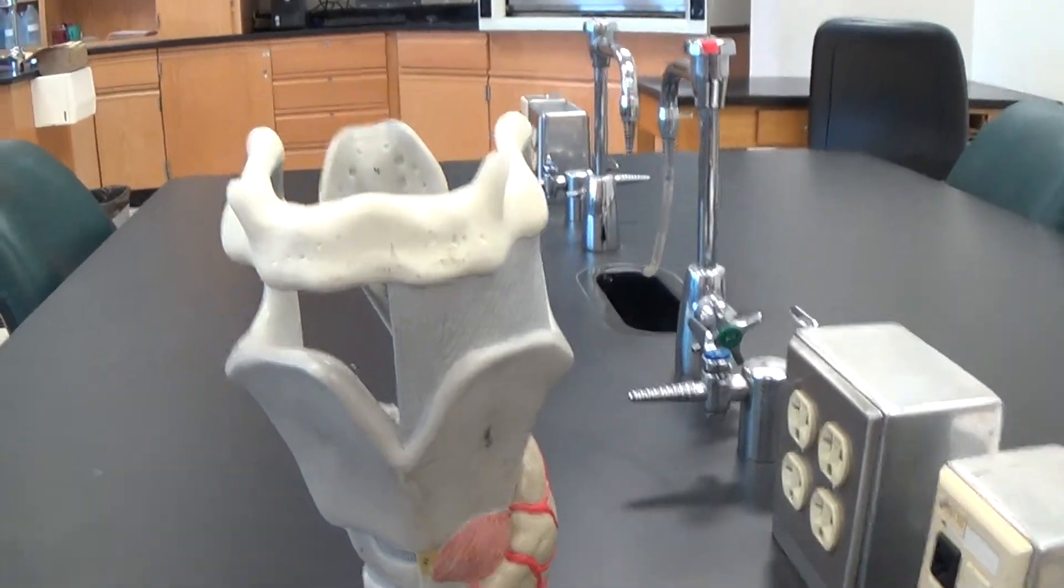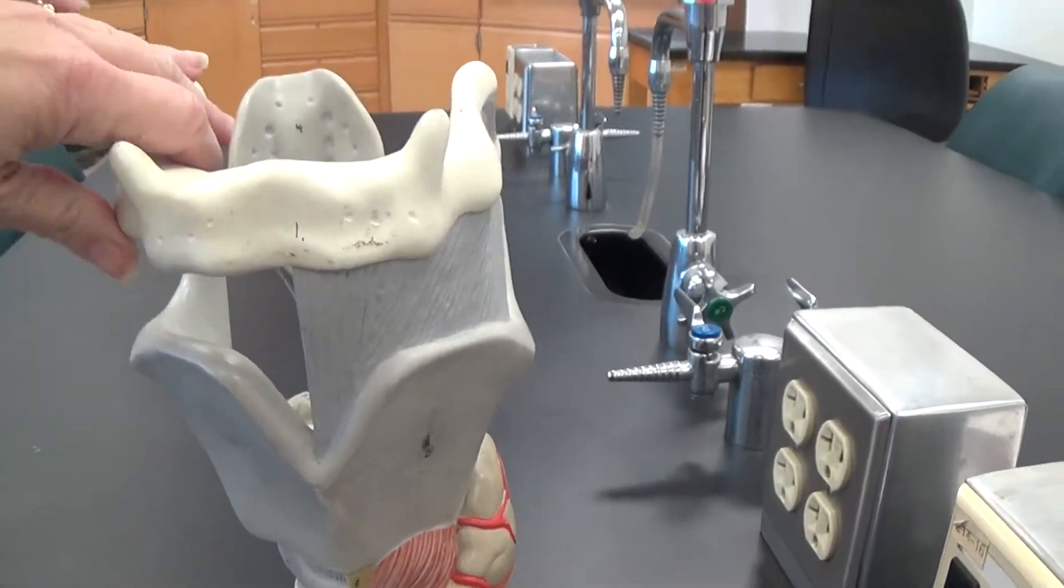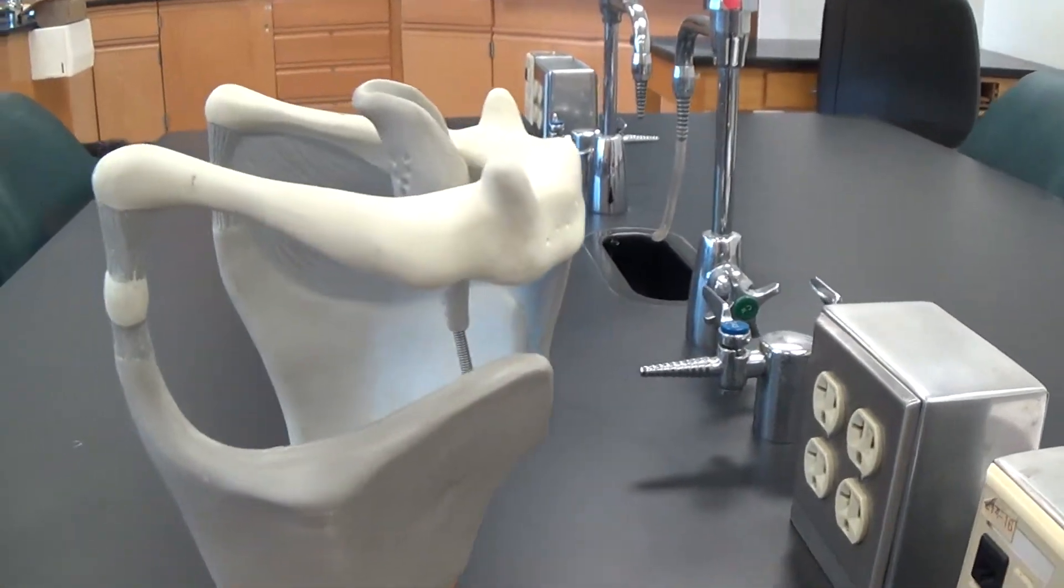This is a nice short model, and in white here we have the hyoid bone, the one bone that is not attached to any other bones in the body.